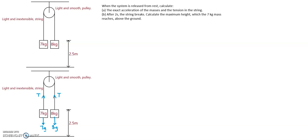Because the 8 kilogram mass is heavier than the 7 kilogram mass, the acceleration of the system will be in this direction. So the 8 kilogram mass will be going downwards, and the 7 kilogram mass will obviously be going upwards.